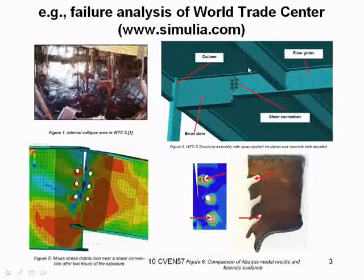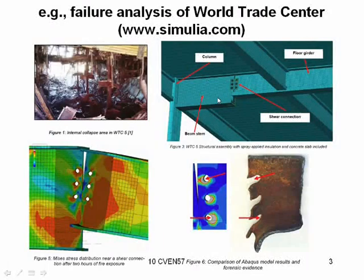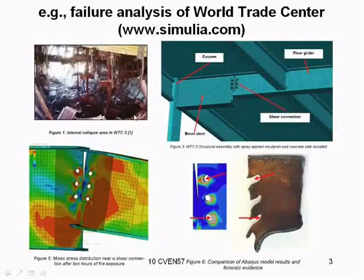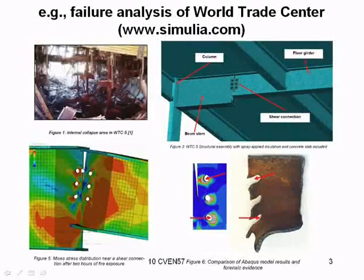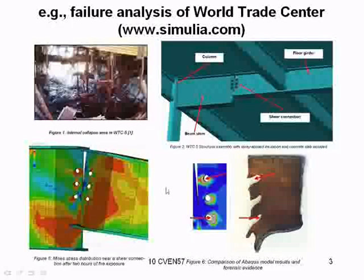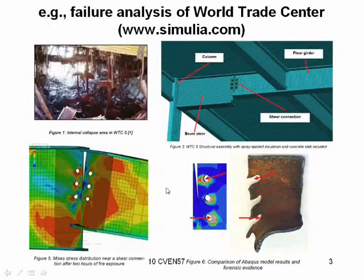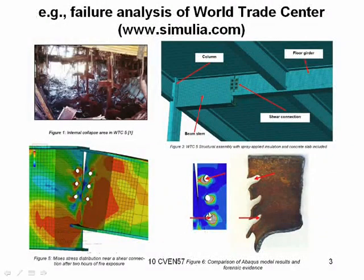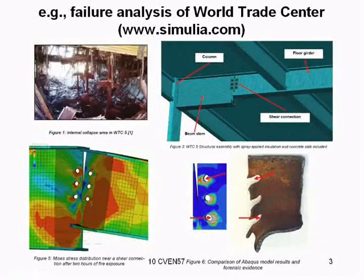They did a simulation — they meshed the I-beams and the shear connection, focusing on the shear connection because that's where they observed a lot of the failures. They had contact between elements, fire exposure accounting for temperature and heating, so it's a thermomechanical analysis with plasticity and nonlinear deformations. This is not poromechanics, but it illustrates the nonlinear material modeling capabilities in Abaqus.